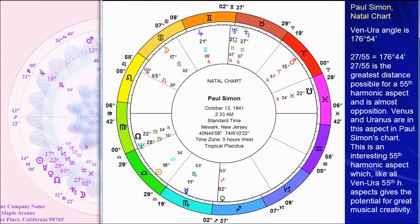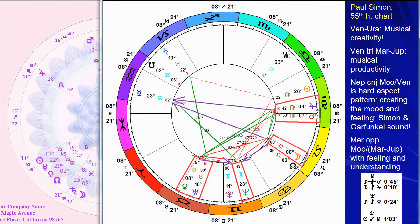Venus is on the fourth house cusp, opposition to Uranus, and they'll show up in the 55th harmonic chart as being conjunct. Let's look at this 55th harmonic chart — we're expecting it to be strong. There's the Venus-Uranus conjunction. Here is Venus at late 8 degrees Taurus making very tight trine aspects to Mars at 7.5 Virgo and Jupiter at 8.5 Virgo — very close trine aspects. So we've got a Venus-Mars-Jupiter showing success and productivity in the 55th harmonic.